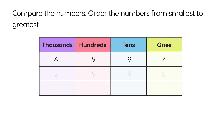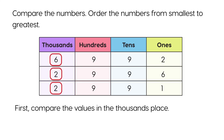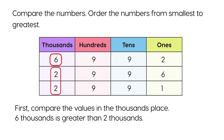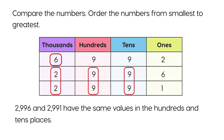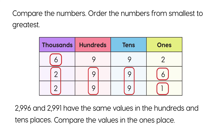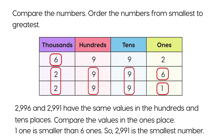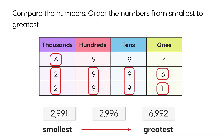Compare the numbers in the place value chart. Order the numbers from the smallest to the greatest. First, compare the values in the thousands place. Six thousands is greater than two thousands. So, six thousand nine hundred ninety-two is the greatest number. Two thousand nine hundred ninety-six and two thousand nine hundred ninety-one have the same values in the hundreds and tens place. Compare the values in the ones place. One one is smaller than six ones. So, two thousand nine hundred ninety-one is the smallest number.